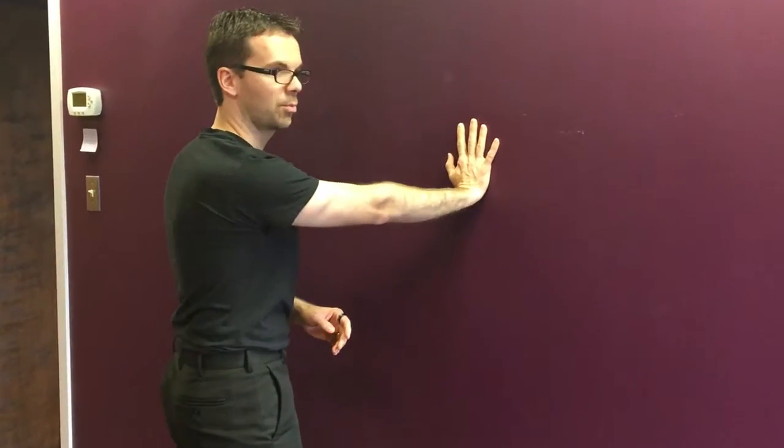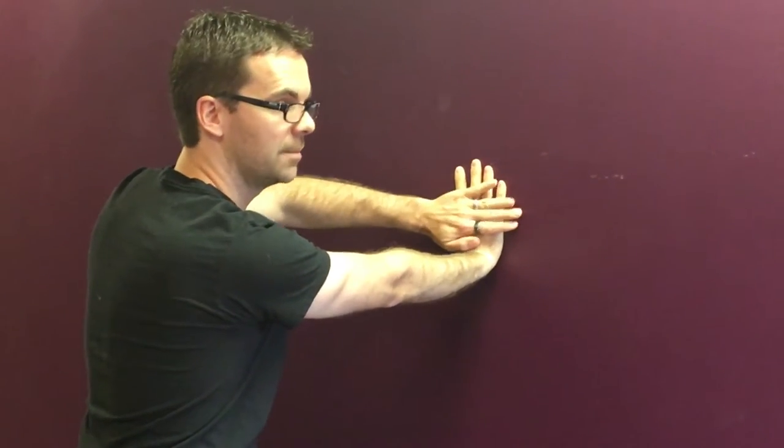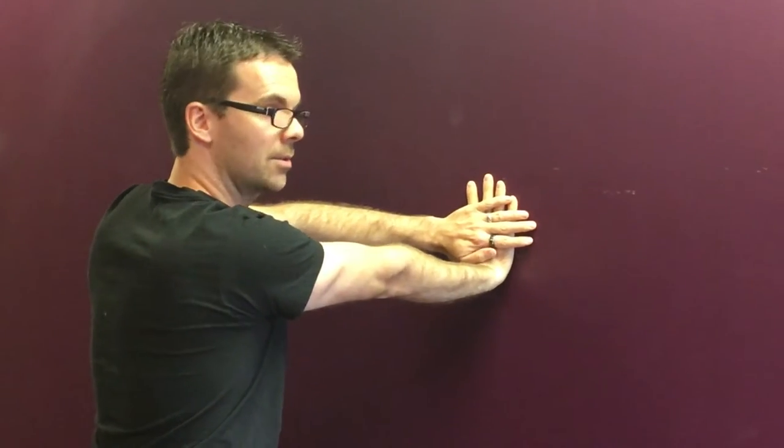This is part one called elbow circles. Place your hand with gentle pressure against the wall. You're going to pin that with your other hand, straighten the elbow out,